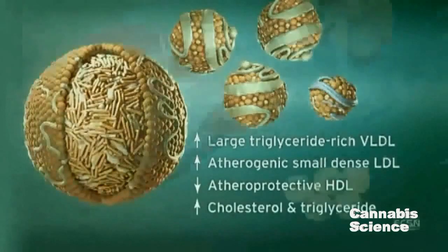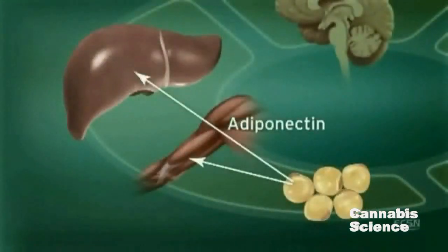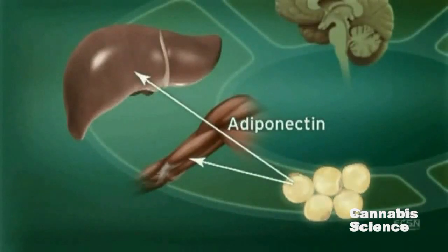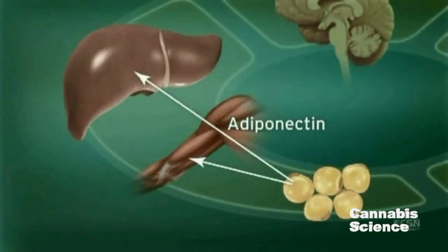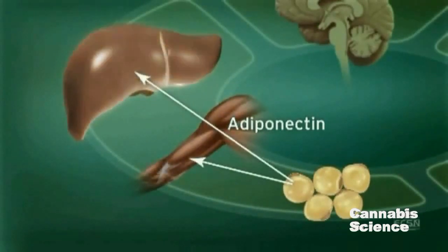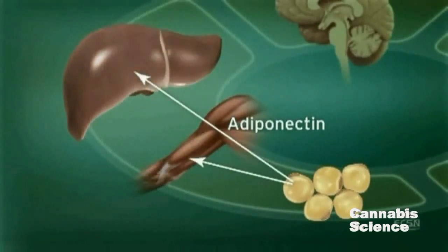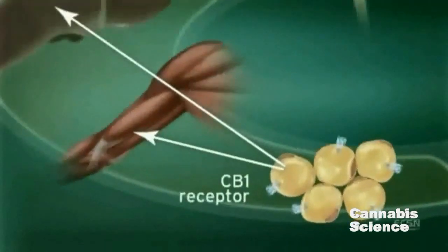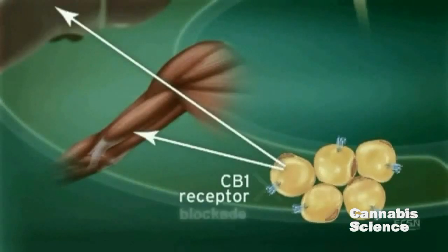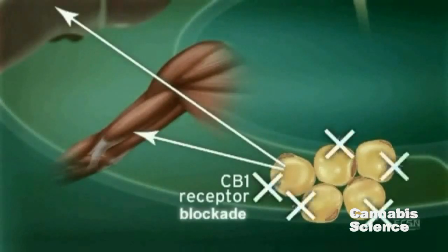Adiponectin, another hormone secreted by adipocytes, regulates lipid and glucose metabolism. Adiponectin is believed to regulate fatty acid oxidation in muscle and liver, thus improving insulin sensitivity. CB1 receptor stimulation in adipocytes reduces adiponectin, while CB1 blockade increases adiponectin synthesis.